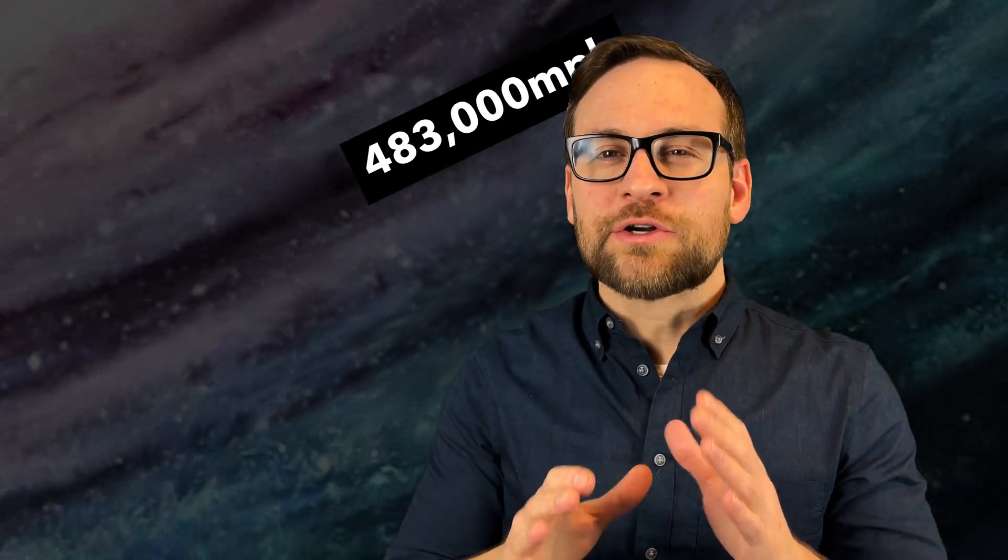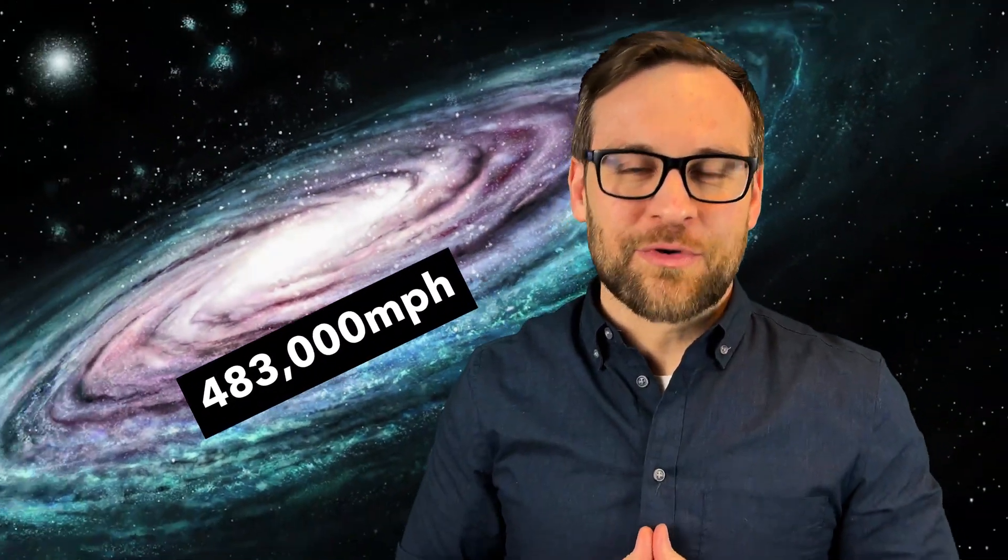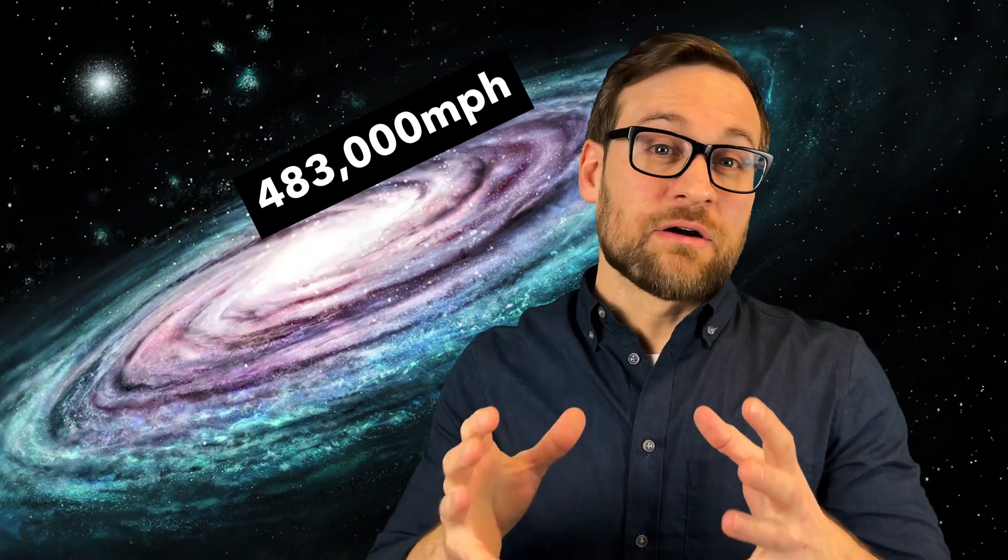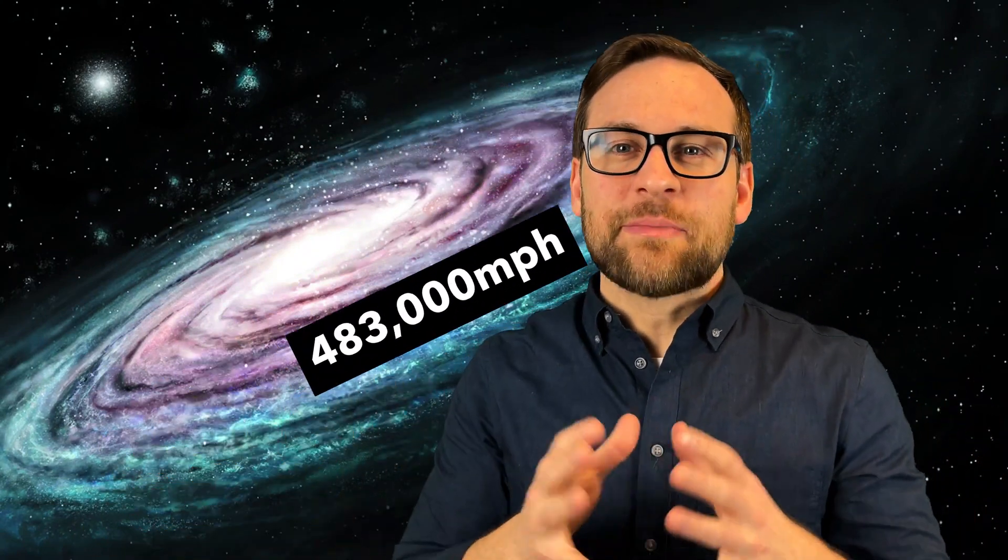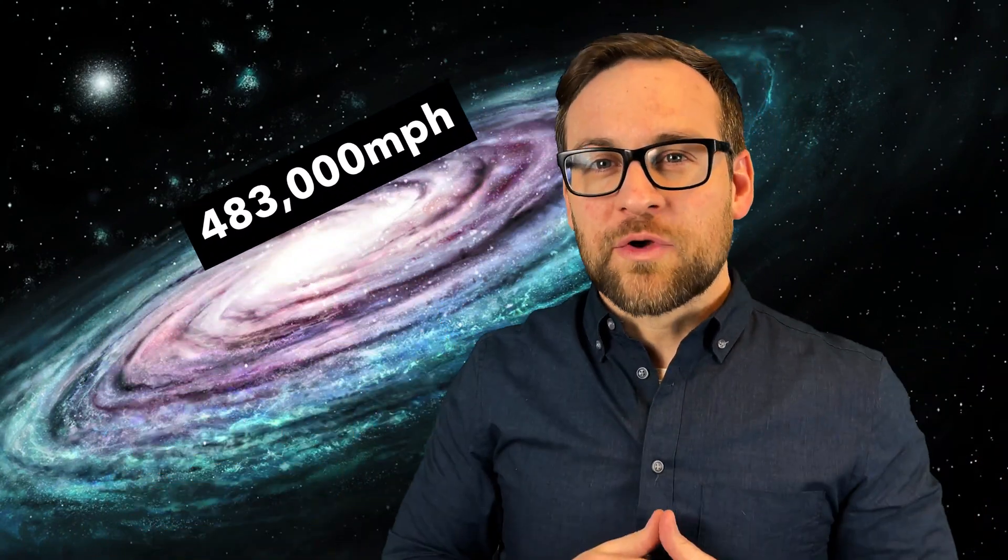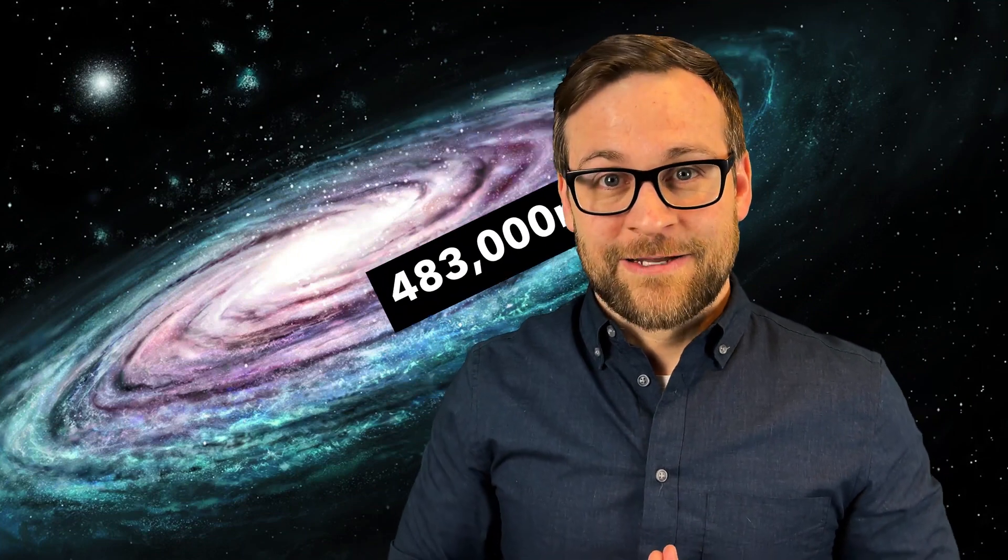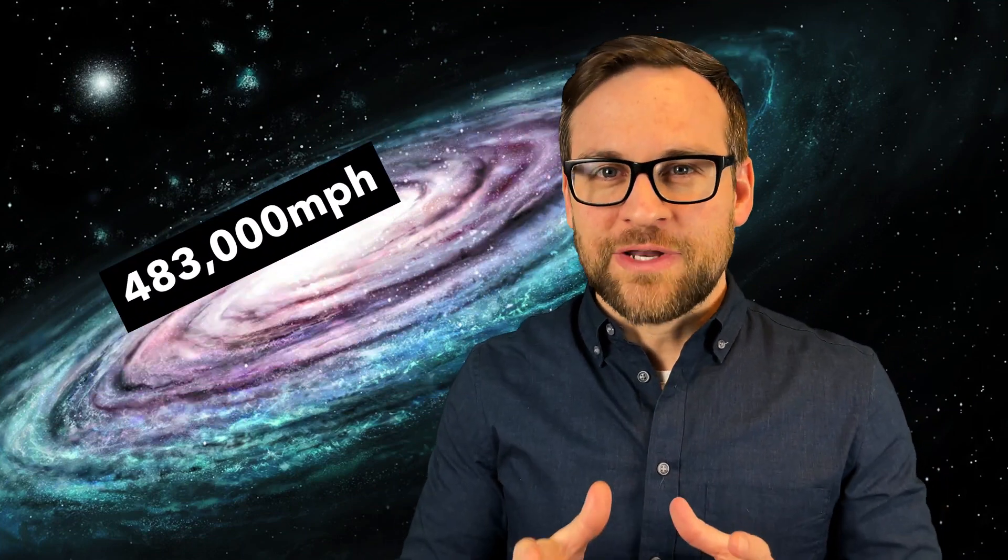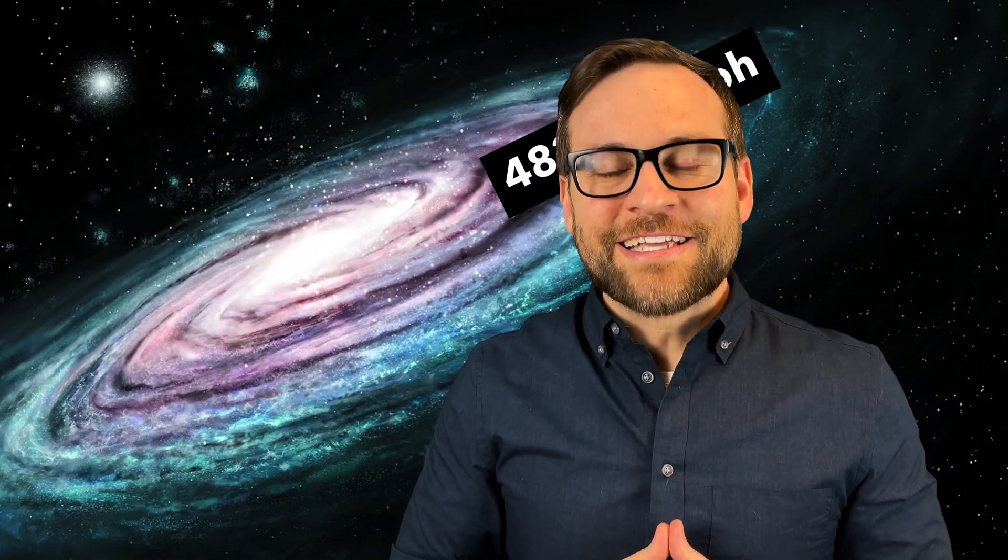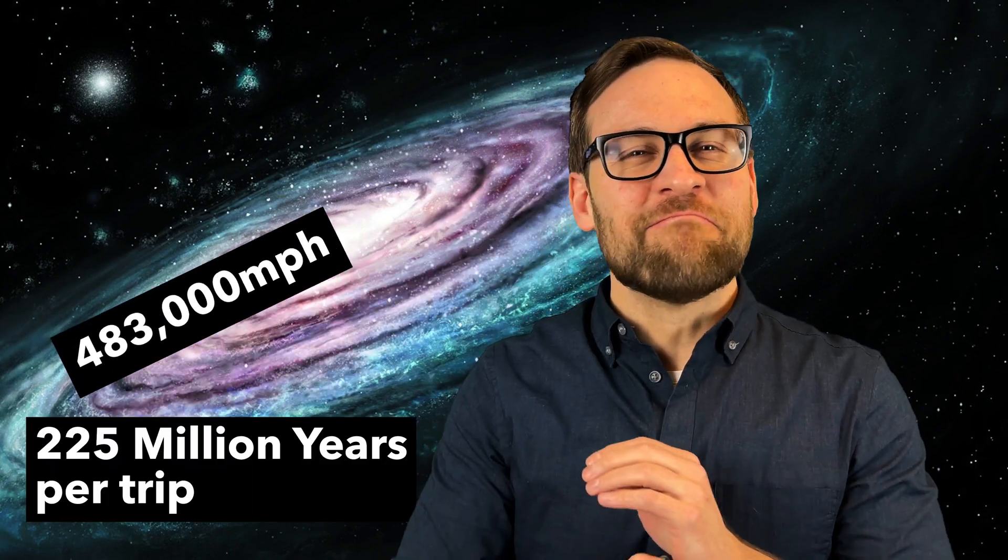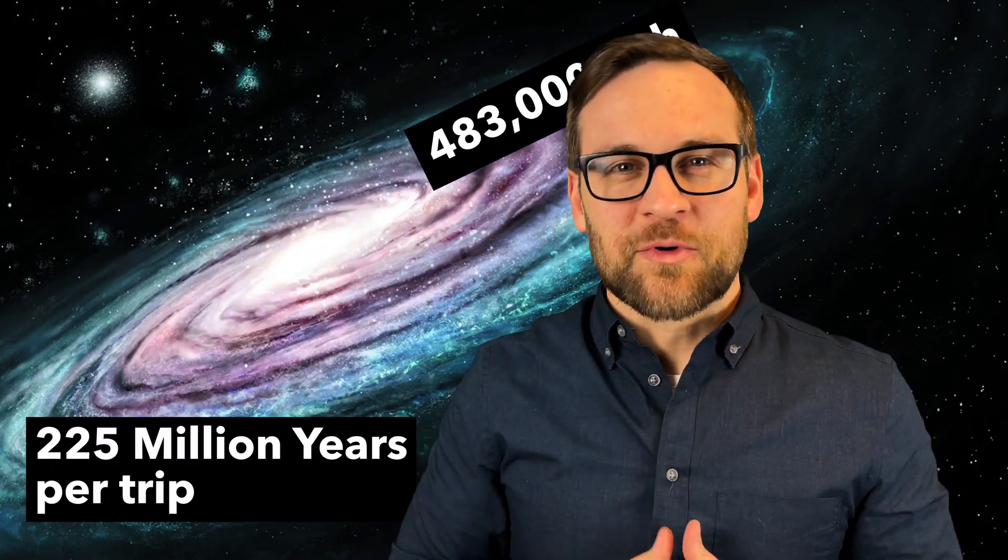We aren't just sitting here in the empty void of space. No, our little cluster of planets and sun are moving together through our galaxy at 483,000 miles per hour. This gives us our galactic year, which is the time it takes our sun to orbit within the Milky Way galaxy. Even though our solar system is moving at this incredible speed, it takes around 225 million years to make the trip around our galaxy.